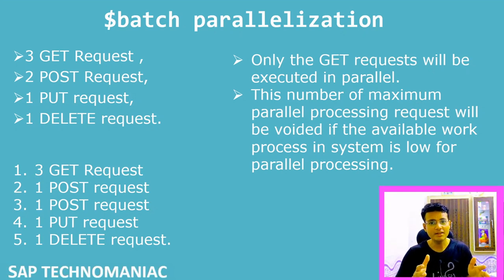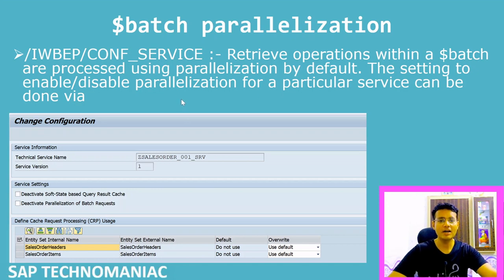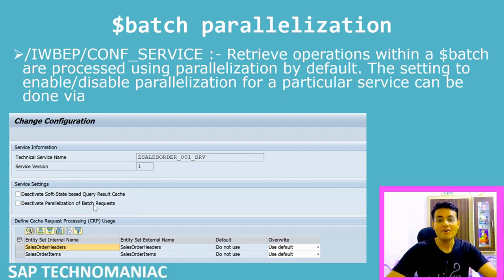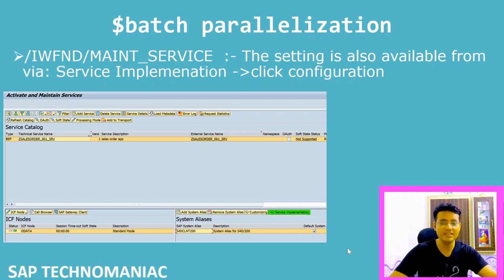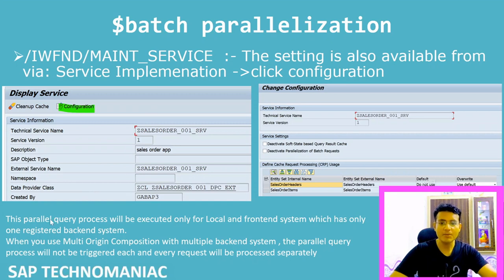If you want to disable parallel processing for a particular service, there are two options. Either go to transaction IWBEP > C1APPS_SERVICE_TREE, find your service, and deactivate parallelization for that specific batch request. Alternatively, go to the Maintain Service transaction, click on Service Implementation, then Configuration, and you can disable parallel processing for those queries within the batch.